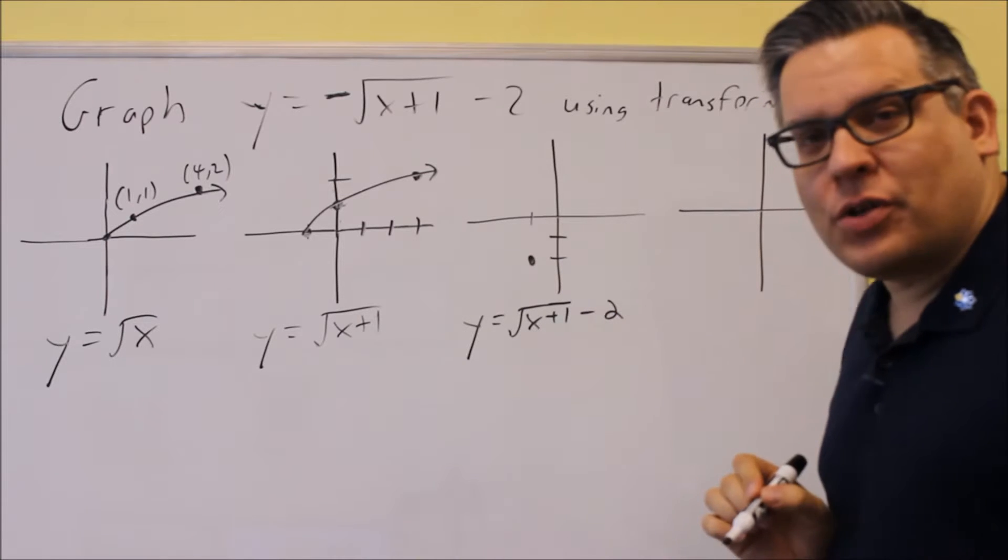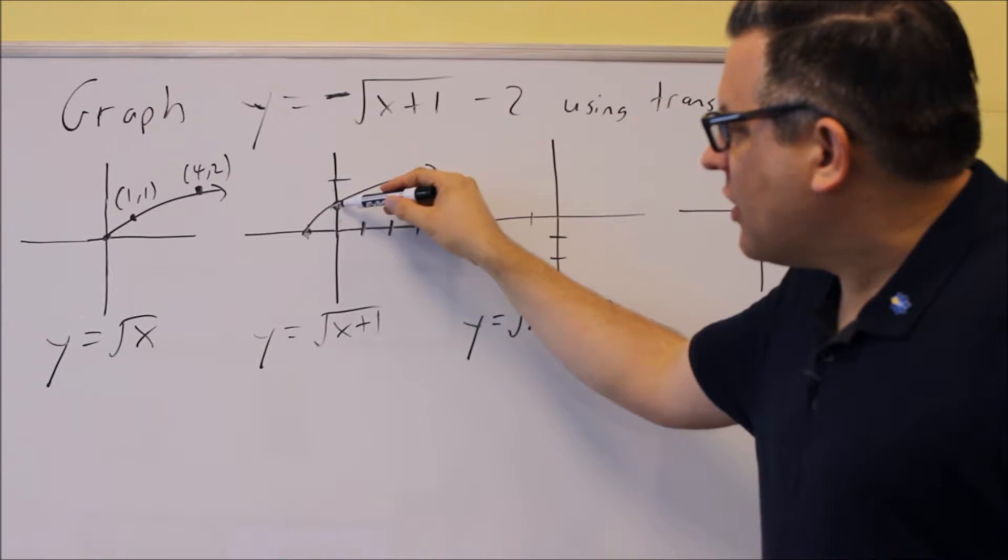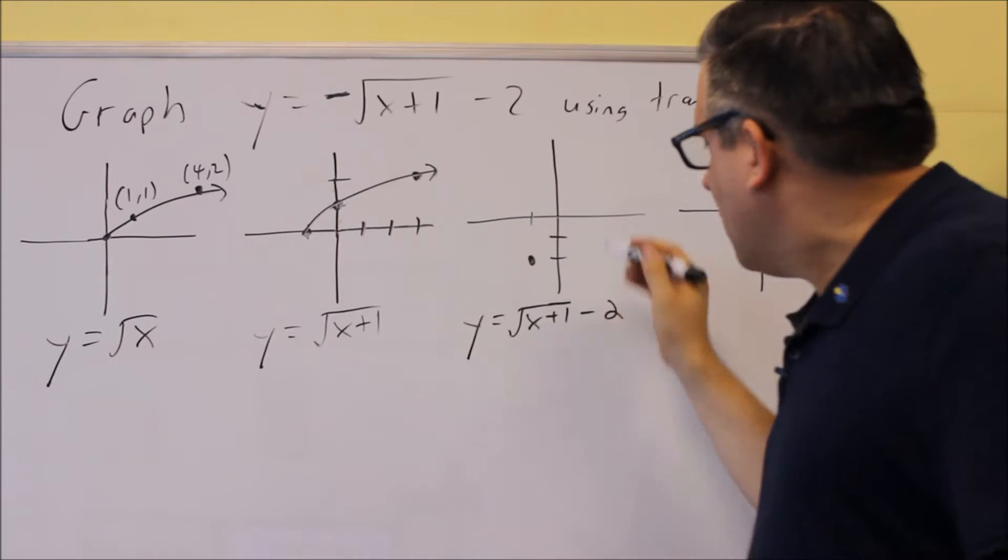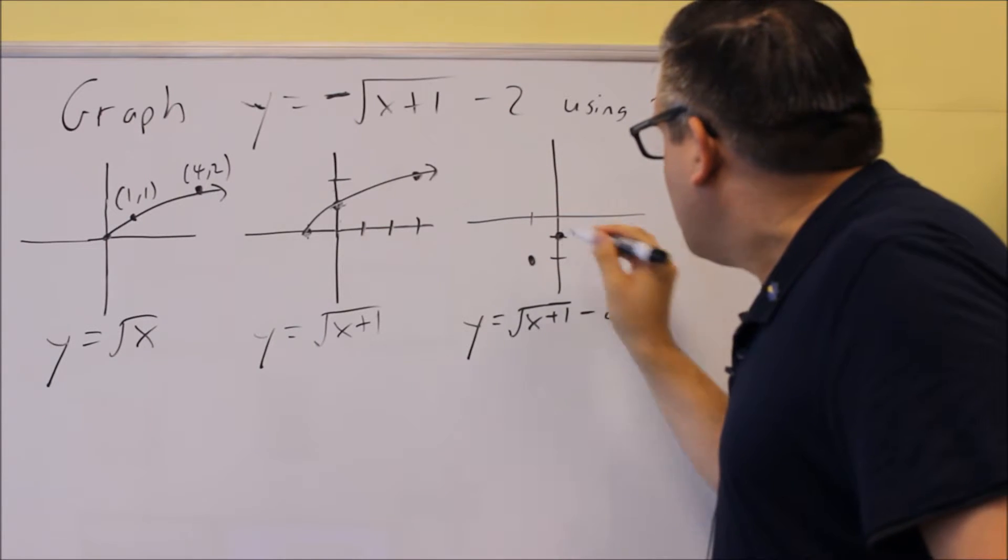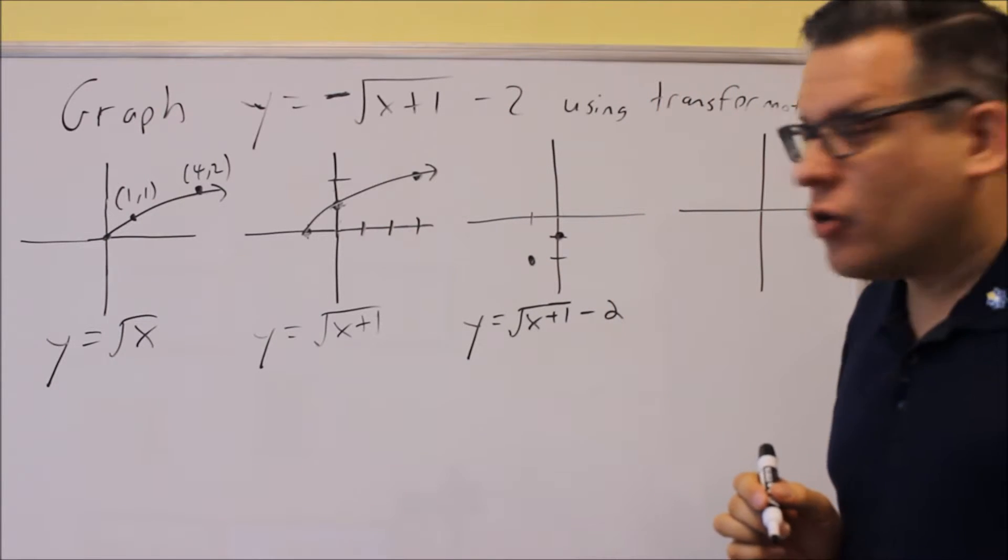This point that was at 0, 1, if you move that down 2 units, it's now going to go through this point right here at 0, negative 1.